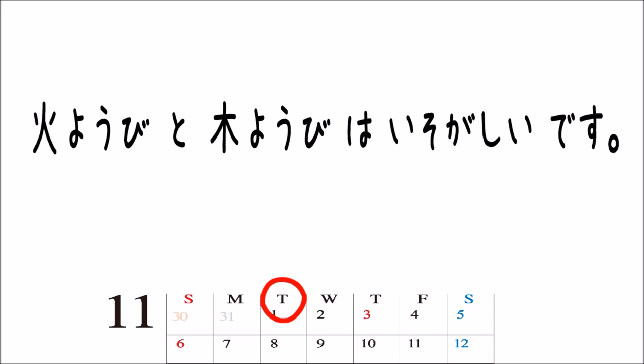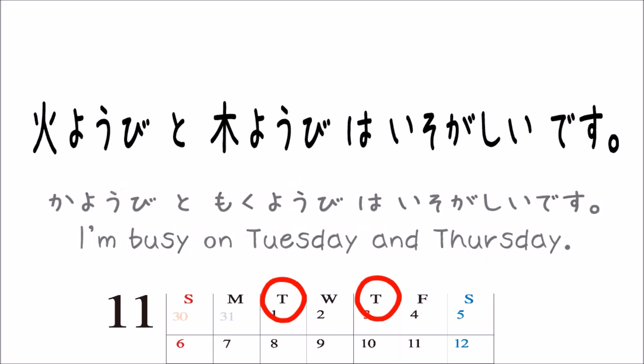We use the onyomi for the kanji fire. So we should do the same for the second kanji. Tree plus yobi makes Thursday. It comes from the word mokusei, Jupiter. So we say mokuyoubi for Thursday. All together it says kayoubi to mokuyoubi wa isogashii desu — Tuesday and Thursday are busy, or I'm busy on Tuesday and Thursday.